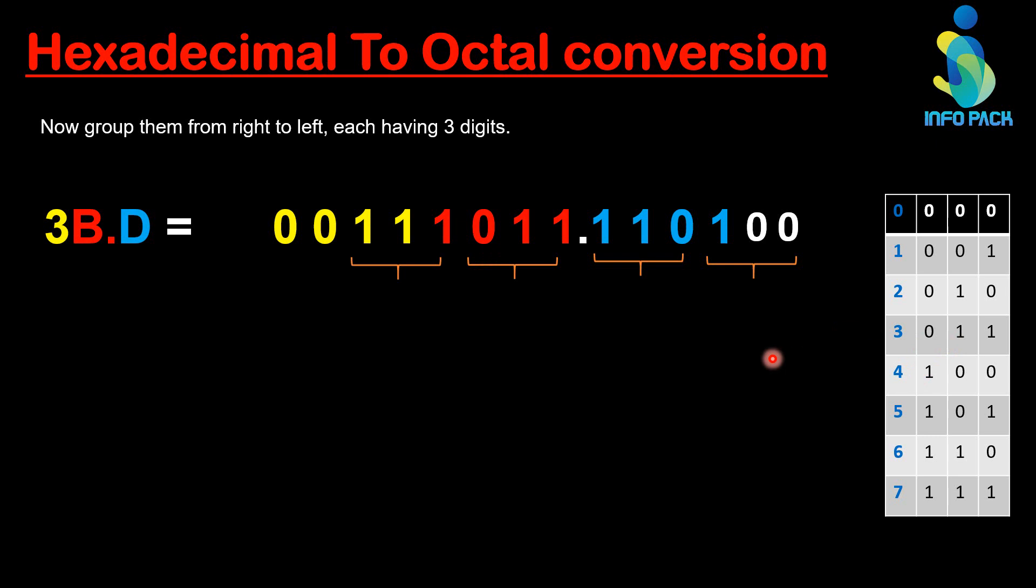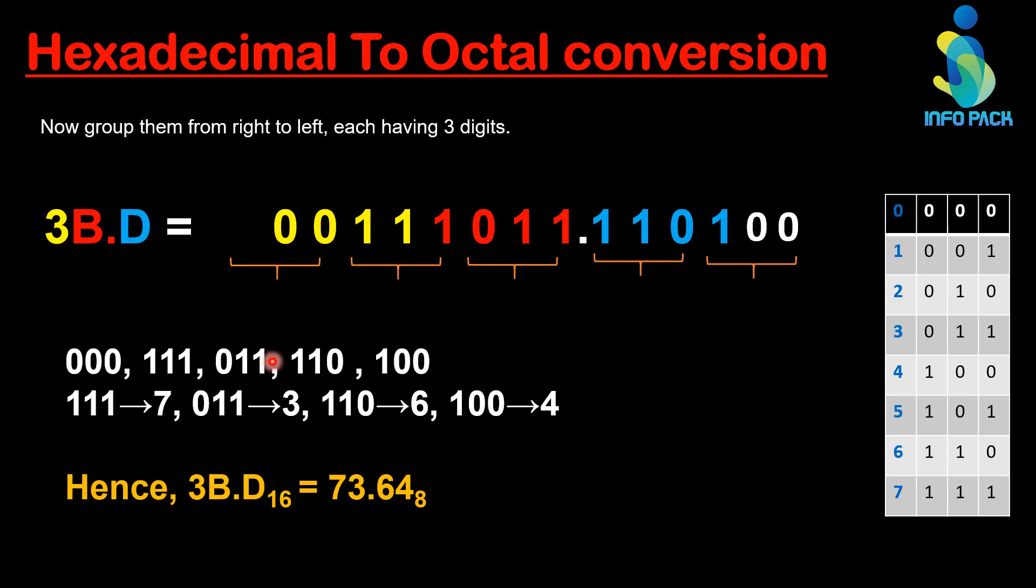This is equal to 3 in octal table. Our next group is 111. This is equal to 7 in octal table. Now by placing zero here, you will get the zero, so you can discard this group also.